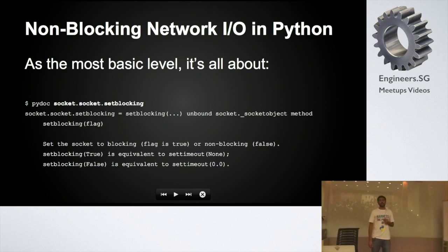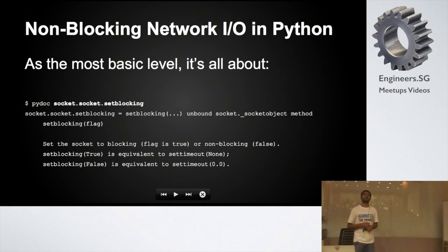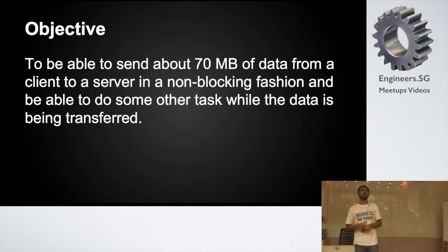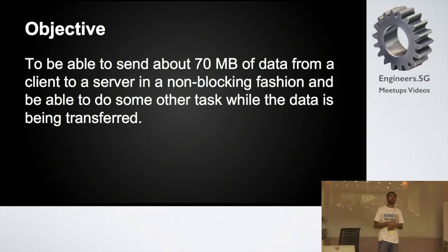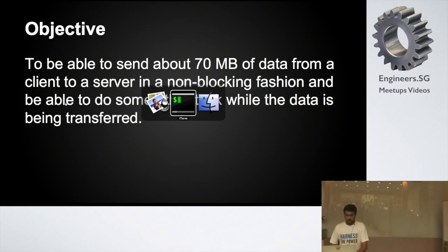What it comes down to making a socket non-blocking in Python is basically this: the socket object has a method called set_blocking, which by default every socket uses — you can make it not block. But what does that exactly mean? It's not the end of it; if it was that simple, we wouldn't be here. So let's quickly look at that. I'm going to start with some examples. The idea is we'll have one small server script and one small client script. The client will try to send about 70MB of data to the server, which will just echo it back. This is all TCP. We'll start with blocking and move step-by-step to implement a non-blocking client.